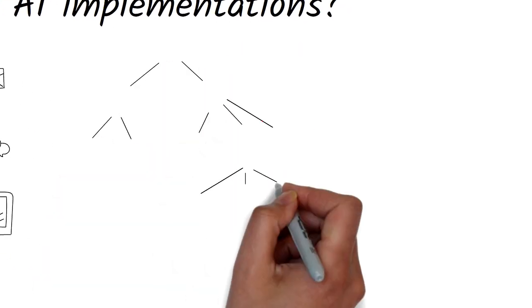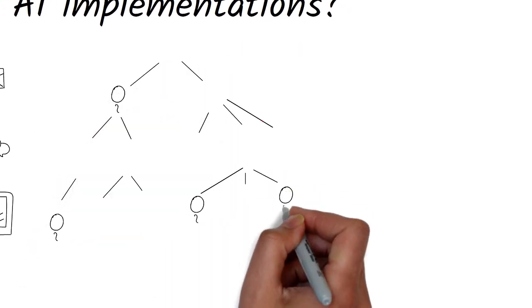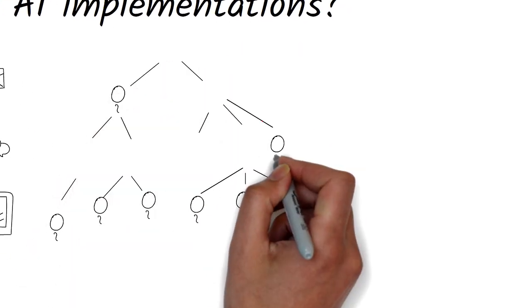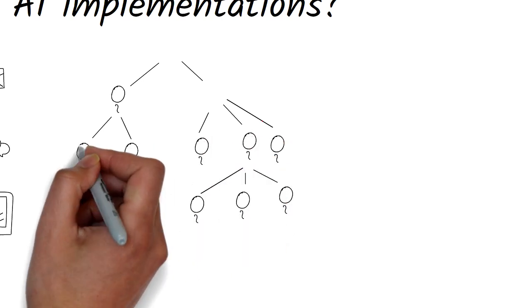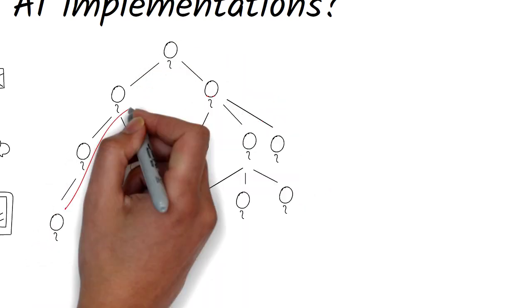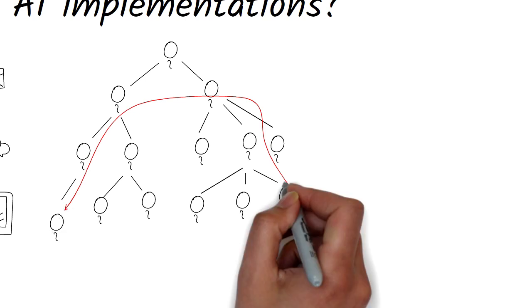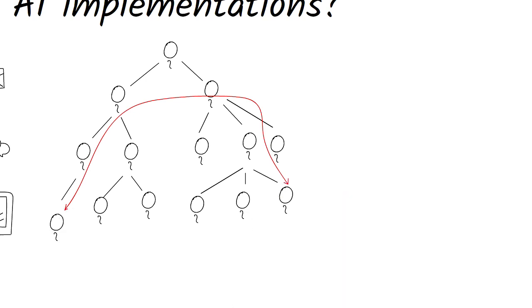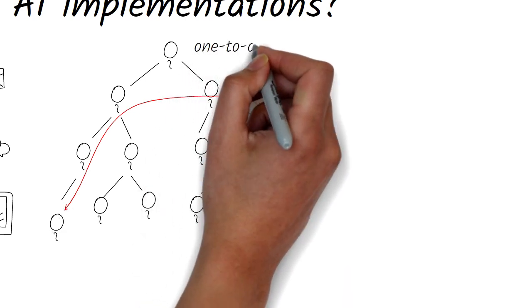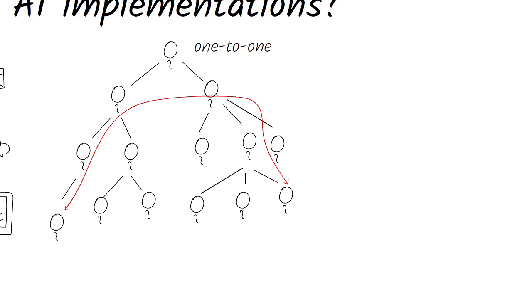The reporting structure in an organization dictates that communication happens in a certain way. If someone, say, in marketing wants to communicate with another in engineering, one possible route to take would be through and up the chain and then down. Even though this is inefficient, this is how it's done, even today.